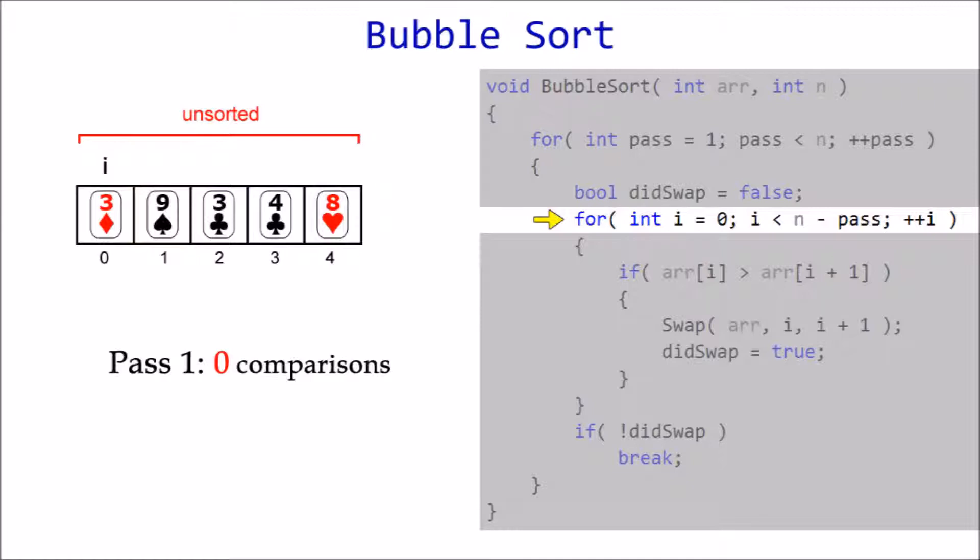This loop executes while the current index i is less than n minus the current pass. Wait, where did n minus pass come from? Well, n minus pass tells us how many comparisons we'll need for a particular pass. In this first pass, it's five minus one, which is four comparisons.